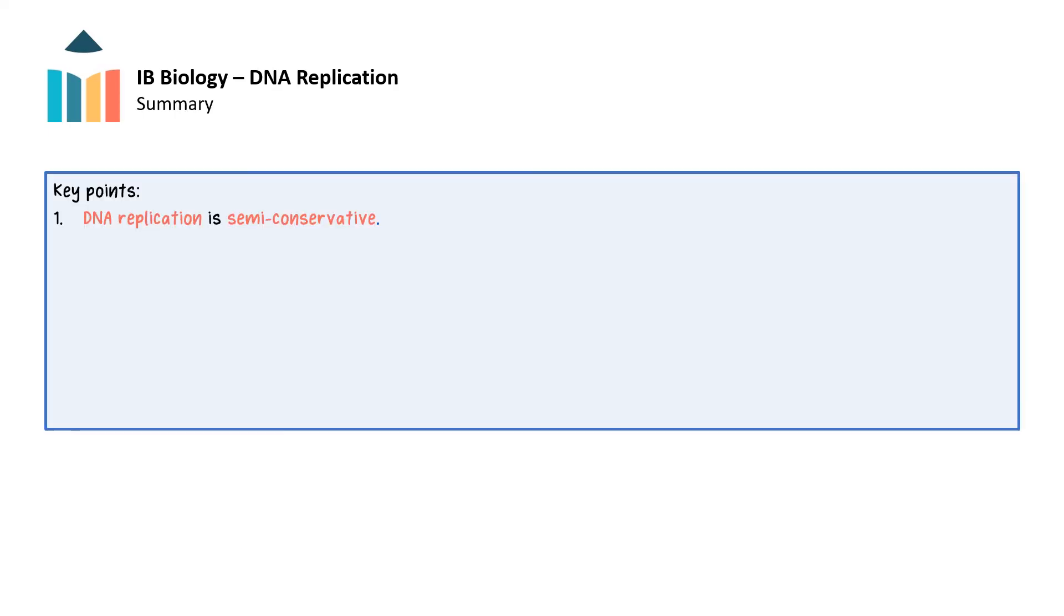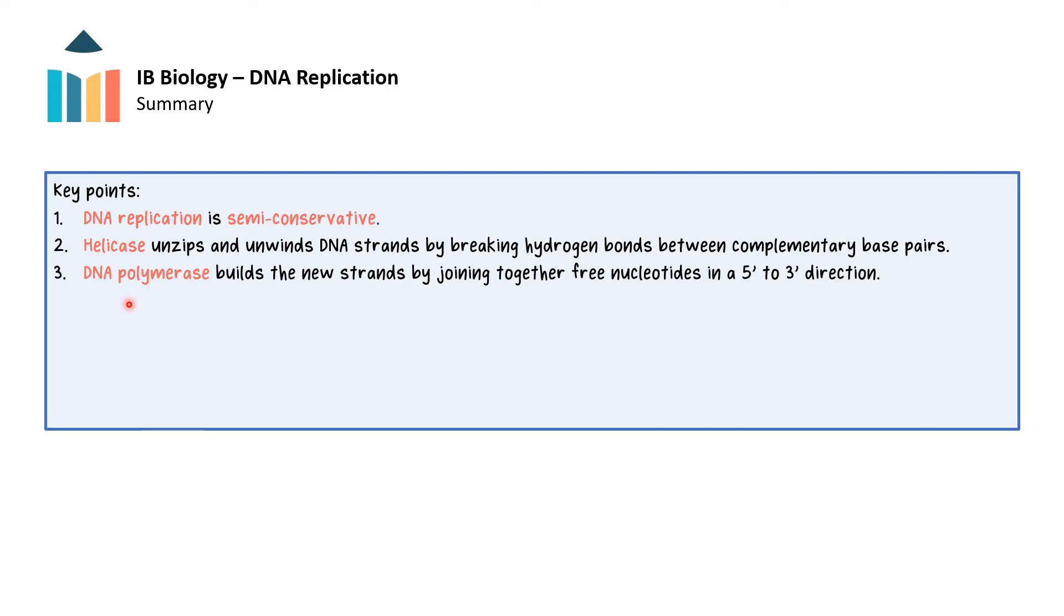In this video, we revised these following key points. DNA replication is semi-conservative where each new strand contains a parent strand and a daughter strand. The process of DNA replication begins when helicase unzips and unwinds DNA strands by breaking hydrogen bonds between complementary base pairs. Next, DNA polymerase will build new strands by joining together free nucleotides in a 5' to 3' direction. Free nucleotides will arrange themselves according to base pairing rules as a result of hydrogen bonding.